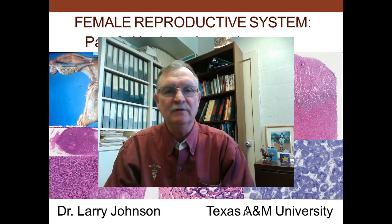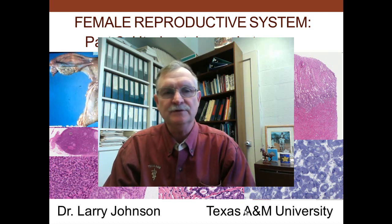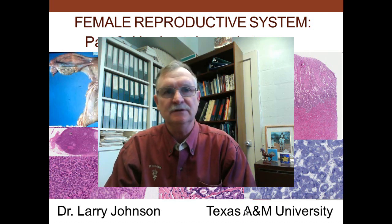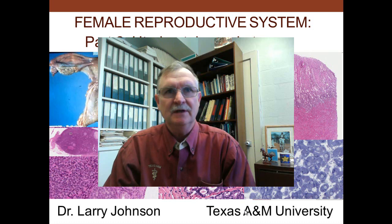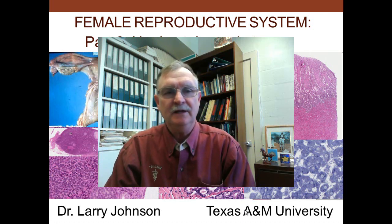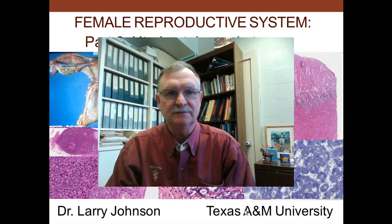Today we're going to talk about the female reproductive system. It will be composed of three parts. The first part has to do with the ovary and the hormonal orchestration of the reproductive process. Part two has to do with the uterine tube and how things are different during the menstrual cycle and pregnancy. Part three will continue with the cervix and vagina, then the placenta, and end with the mammary glands.